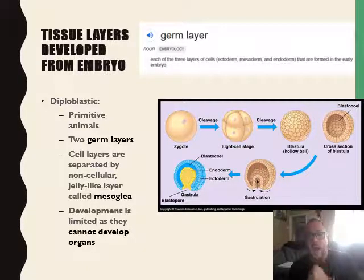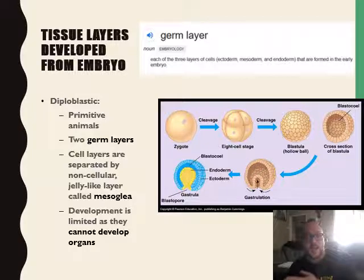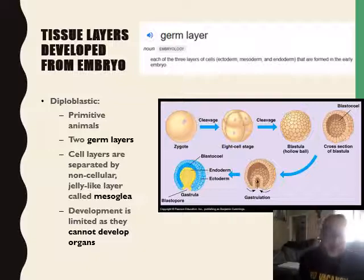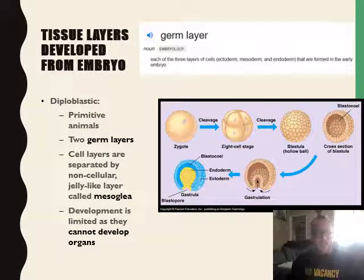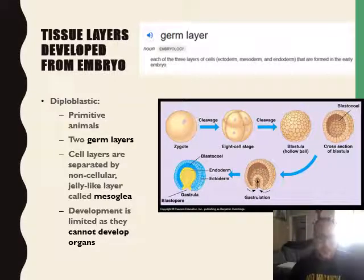Now you have an understanding of how another layer can form inside. The blue layer is called the ectoderm, or the outside layer, and the inside is called the endoderm. You need to know those two words. Now let's look at the left-hand side where it says diploblastic — 'di' means two — diploblastic coming from the blastula, so it just means a two-layered organism.